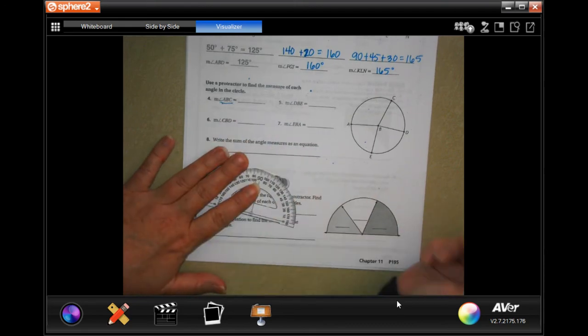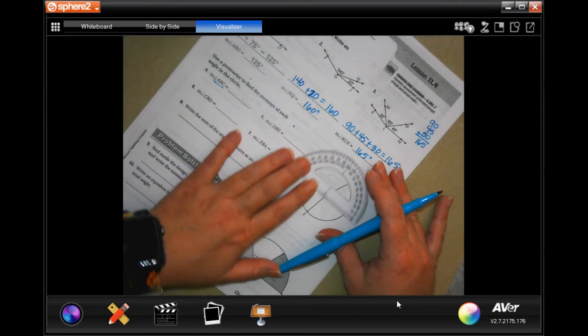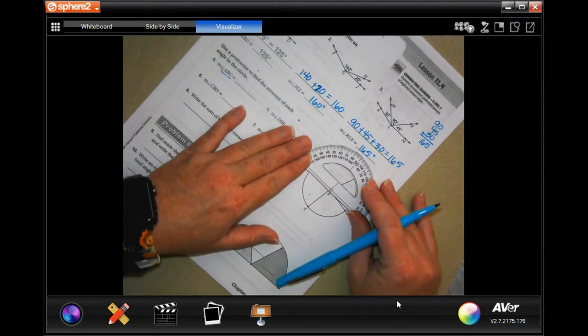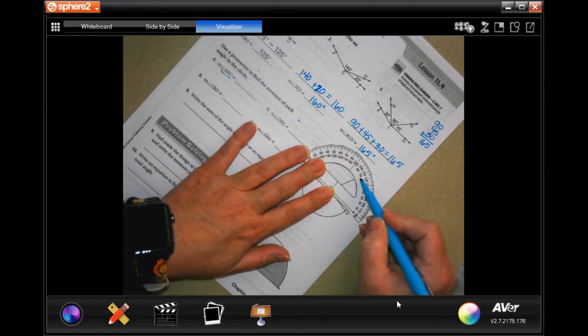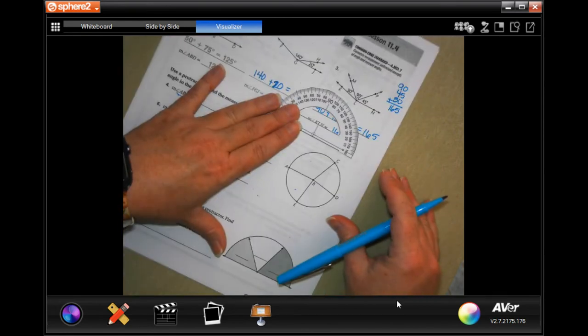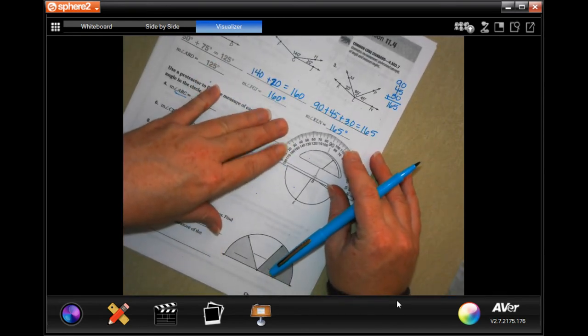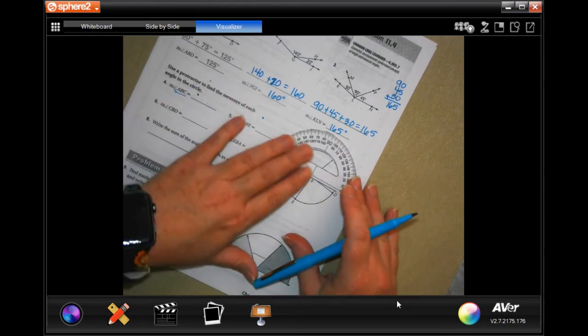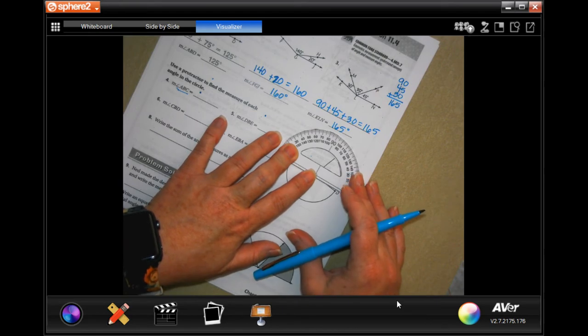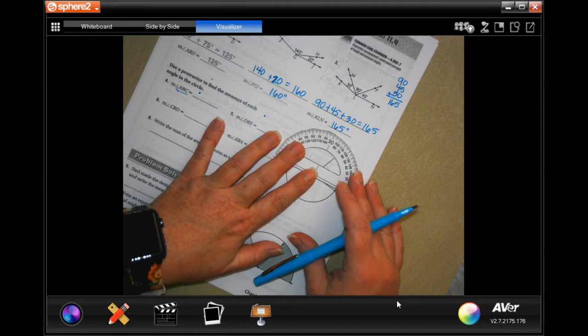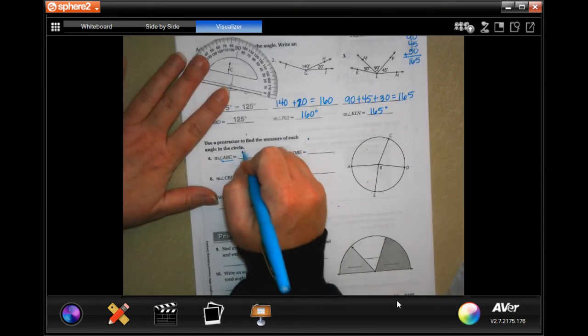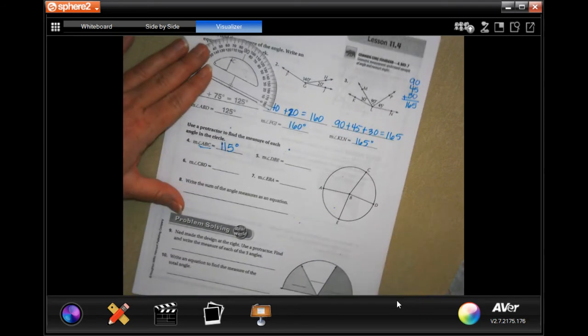Okay. So this one wants us to do ABC. I'm going to put the line going straight from A to B. And then you're going to use the inside numbers. That says 70. Sorry. Give me just a second guys. Oh, gotcha. I went the wrong way y'all.